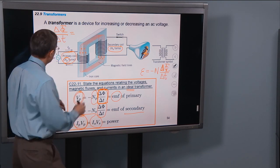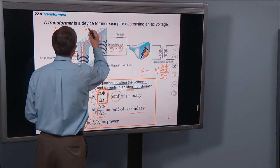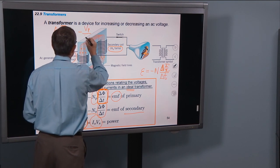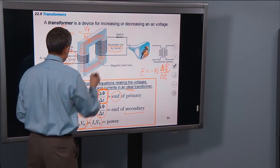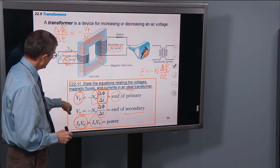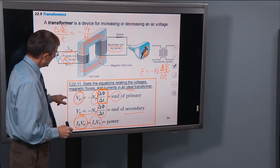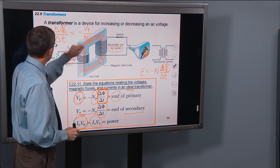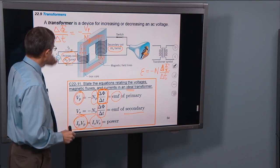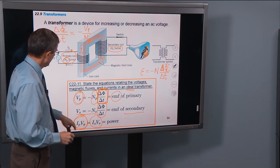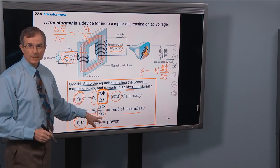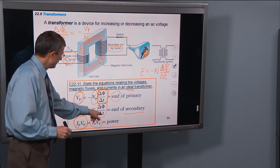So, Δφ divided by Δt, from this first primary equation, will be minus Vp over Np. I've divided through by Np. I've multiplied both sides of the equation by a minus sign, and that's what I get for Δφ by Δt. I can do the same thing for the secondary equation. Δφ divided by Δt,